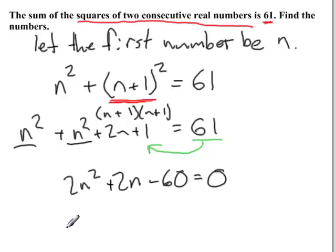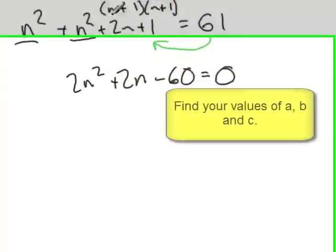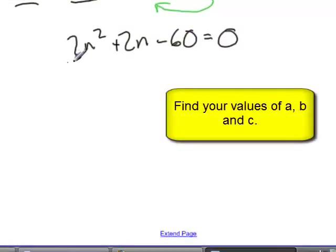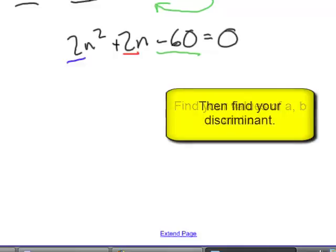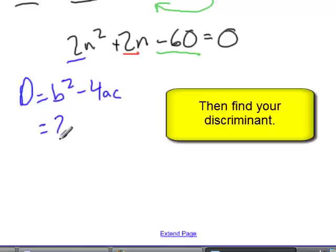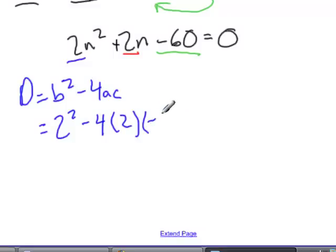Now I'm just going to go ahead and use the quadratic formula to solve this. So I know my a value is going to be 2, my b value is going to be 2, and my c value is going to be minus 60. So I'll go ahead and find my determinant first. So my determinant is equal to b squared minus 4ac, which is equal to 2 squared minus 4 times 2 times negative 60, which would be 4 plus 480, or 484.